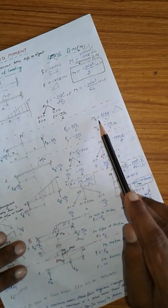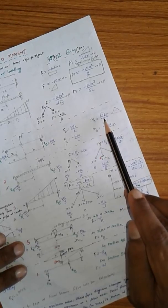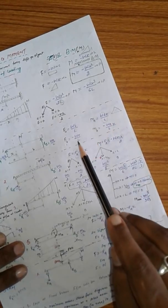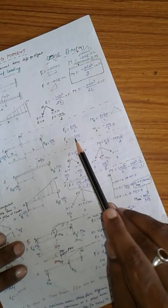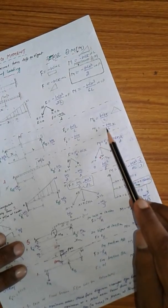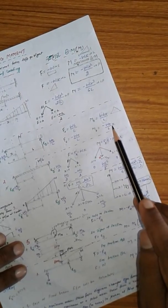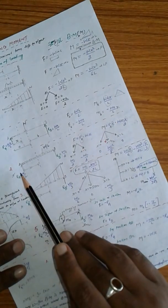And moment Ma is equal to wb into x upon L. And Fv is equal to minus wa upon L. And Mb is equal to minus wax upon L. Second case is the UDL at simply supported beam.